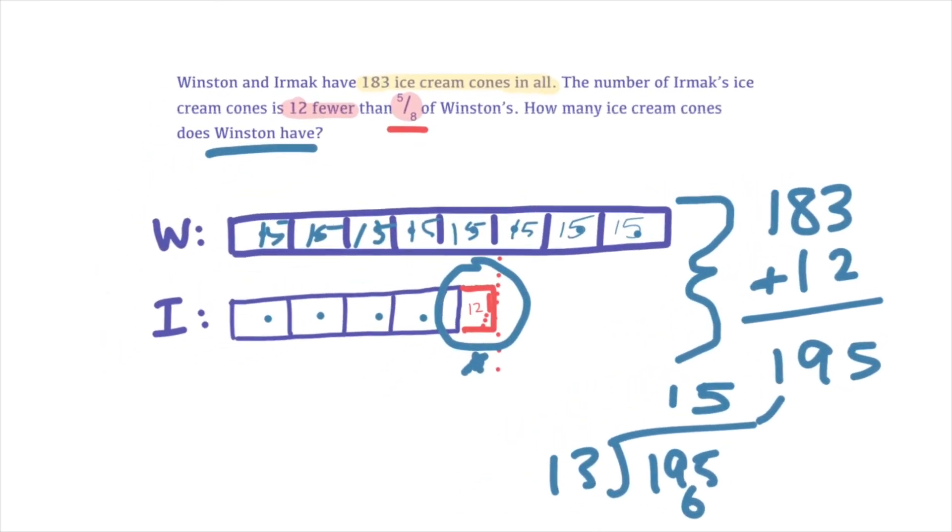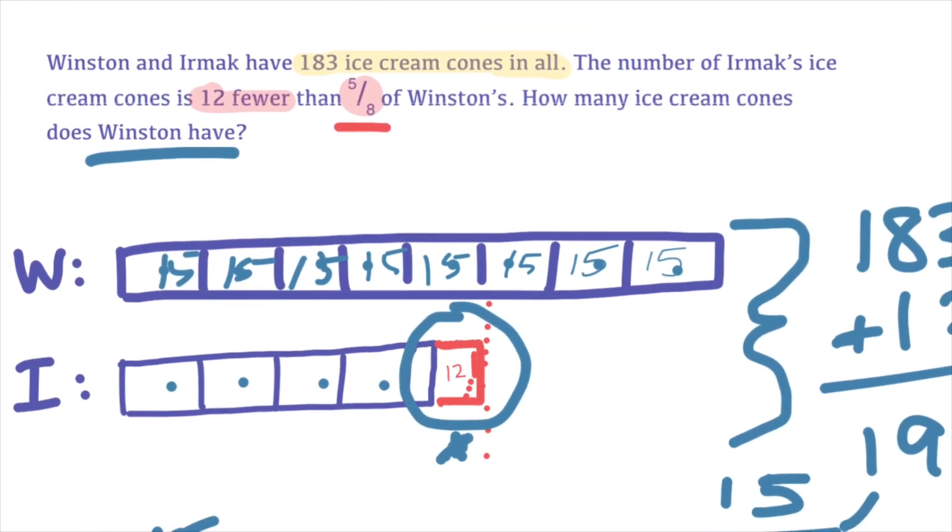We need to know how many cones Winston has. So I see Winston. He has 8 blocks, 15, and each block is going to give him 120 ice cream cones. Lucky Winston. I hope he's going to share.